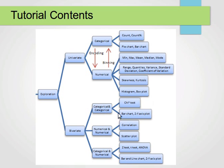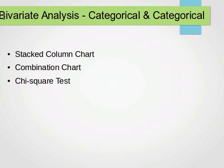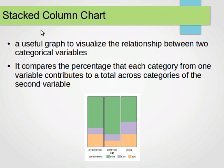We have chi-square test, bar charts, and the two y-axis plot. For the bivariate analysis of categorical and categorical variables, we have three methods: stacked column chart, combination chart, and the chi-square test. The stacked column chart is a useful graph to visualize the relationship between two categorical variables. It compares the percentage that each category from one variable contributes to a total across categories of the second variable.